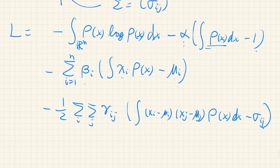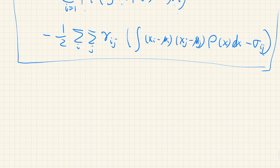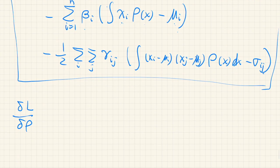So now we want to maximize this Lagrangian with respect to ρ, just like we did for the univariate case. And the way we differentiate this Lagrangian is almost identical to the univariate case. So I will just write the result. So this is functional differentiation.